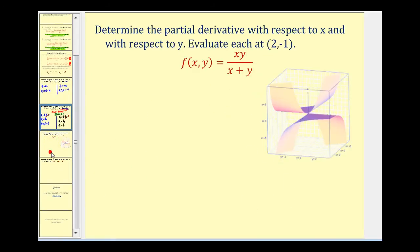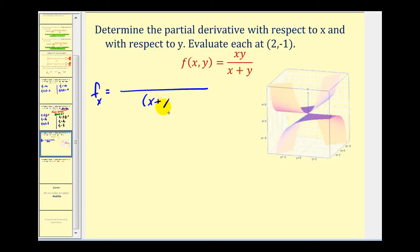Let's take a look at a couple more. Here we want to find the partial derivatives with respect to x and y, then evaluate them at the point (2, -1). This is going to require the quotient rule. The denominator is (x + y) squared. We'll have the denominator times the derivative of the numerator — treating y as a constant, the derivative of xy is just y. Minus the numerator times the derivative of the denominator with respect to x, treating y as a constant, which is 1.